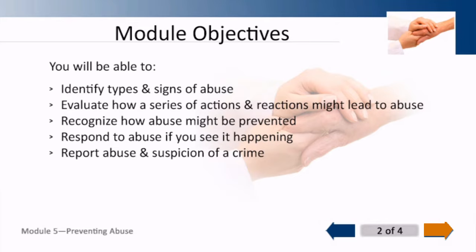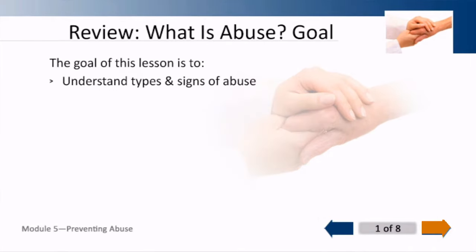That's the key here — preventing it. We need to recognize that it's happened, we need to respond when it's happened, but the real key is to prevent it. And then we need to respond to abuse if you see it happening, and report abuse and suspicion of a crime. So we're just going to review here real quick. The goal of this lesson is to understand the types and signs of abuse.